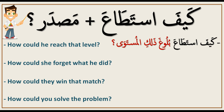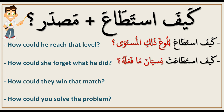'How could she forget what he did?' Because we're saying 'she,' we use كيف استطاعت. So: كيف استطاعت نسيان ما فعله — 'How could she forget what he did?' Here نسيان is the مصدر — the noun form of the verb نسي ينسى, meaning 'to forget.'